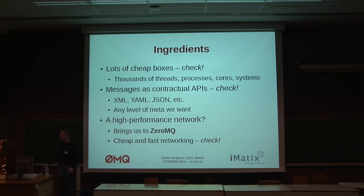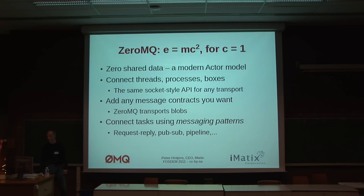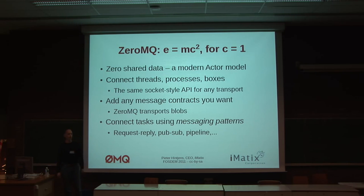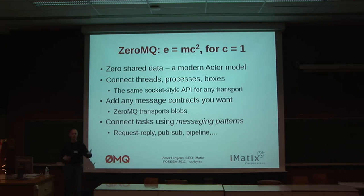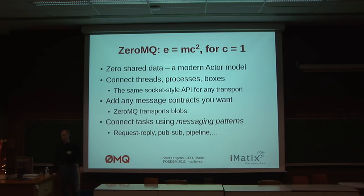So we have ZeroMQ, which is basically fast and cheap networking between threads, processes, cores, boxes. My argument is that ZeroMQ gives you C equals one. So you pay your effort according to the mass of your program, and that's it — yet you can build highly concurrent systems with this. You can connect threads to threads, threads to processes, processes to boxes, using the same API, using the same model, which is basically a socket-style API. You say: talk to this piece, send it messages, and it will send entire messages for you.